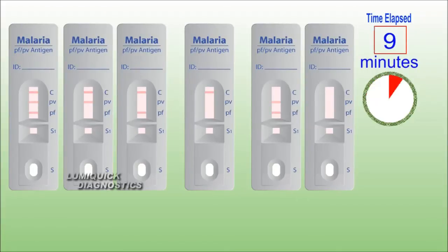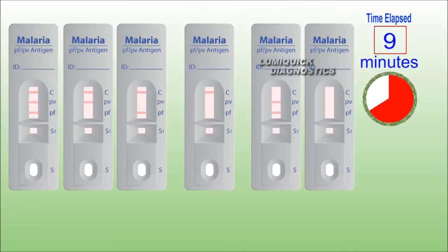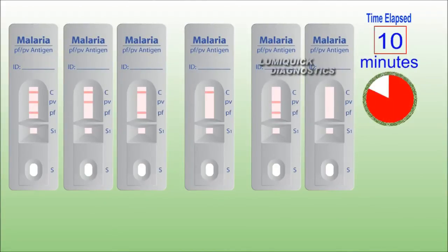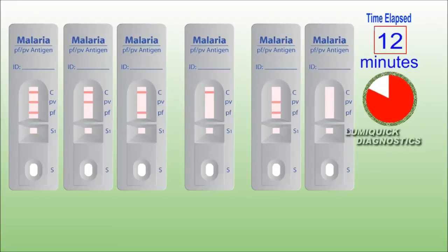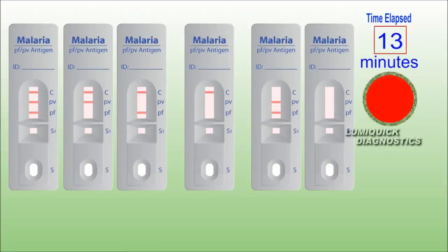In humans, the parasites called sporozoites migrate to the liver where they mature and release another form, the merozoites. The disease now occurs in more than 90 countries worldwide, and it is estimated that there are over 500 million clinical cases and 2.7 million malaria-caused deaths per year.